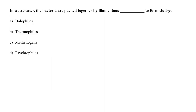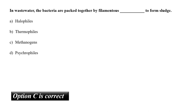In wastewater, the bacteria are packed together by filamentous dash to form sludge. A. Halophiles, B. Thermophiles, C. Methanogens, or D. Psychrophiles? Certain bacteria called methanogens grow anaerobically on cellulosic material and are responsible for producing large amounts of methane along with carbon dioxide. These bacteria are commonly found in anaerobic sludge during sewage treatment. So the correct answer is option C, methanogens.